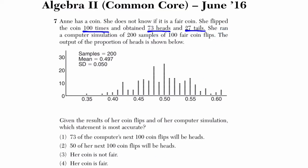So what she does to figure this out is she runs a computer simulation of 200 samples of a hundred fair coin flips. So if you have a fair coin, flip it a hundred times, that's one experiment, do it two hundred times, and this is what you get. This is the data from a fair coin being flipped.